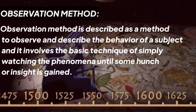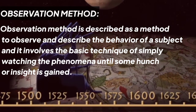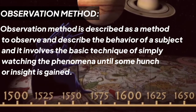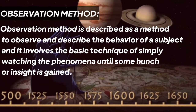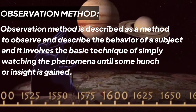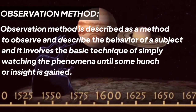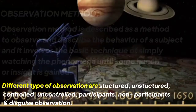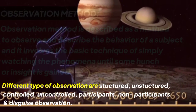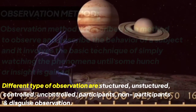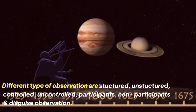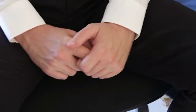The observation method is used when the study relates to behavioral science — observing the behavior of the person you are taking responses from. This method is planned systematically. The different types of observations are: structured and unstructured, controlled and uncontrolled, participant and non-participant, and disguised observation. It depends on the way you are collecting your data.